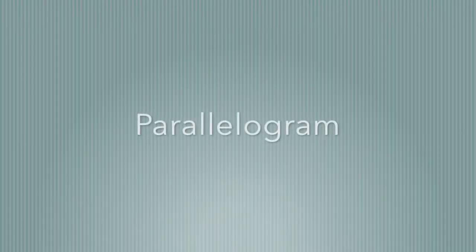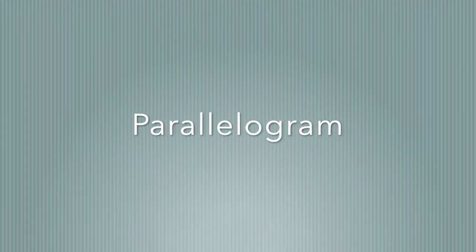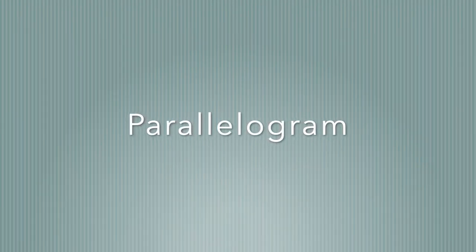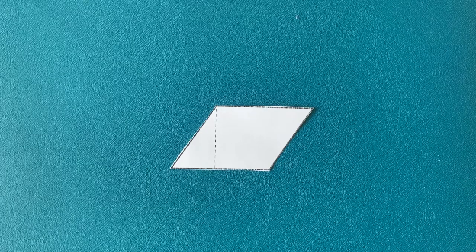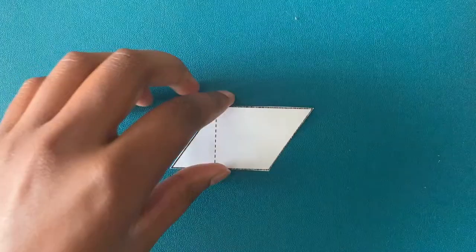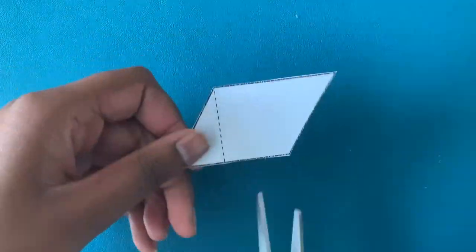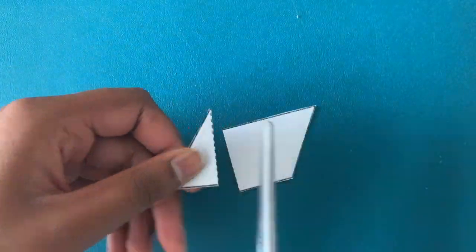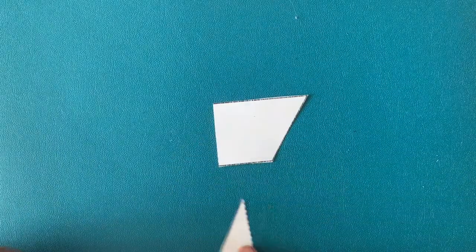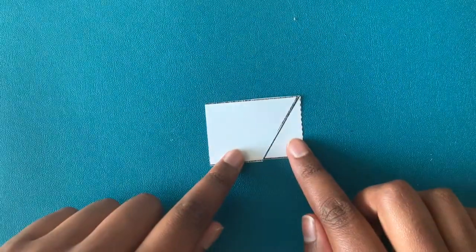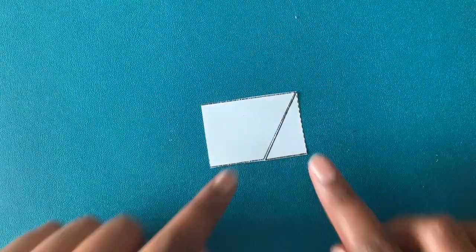First, we'll find the area of a parallelogram by connecting it to the area of a rectangle. To start off, cut out the parallelogram from your template. Cut along the dotted line and bring this triangle to the right side. When you fill in the space, you'll see that this forms a rectangle.